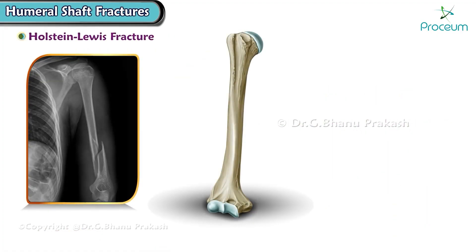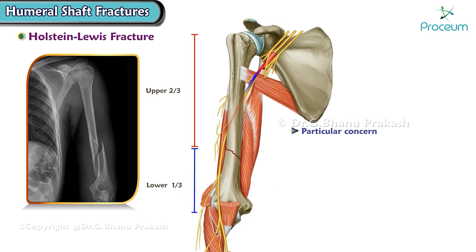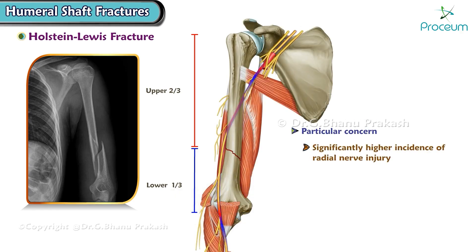A specific type of humeral shaft fracture, known as the Holstein-Lewis fracture, occurs at the junction of the upper two-thirds and lower one-third of the humerus. This fracture is of particular concern due to a significantly higher incidence of radial nerve injury.